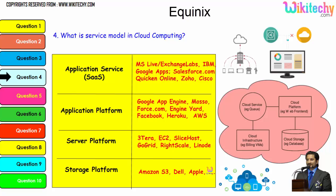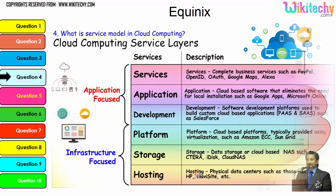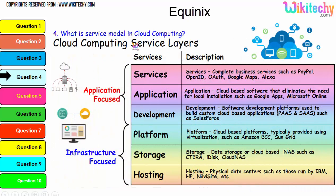Digging deeper into the service model, the typical examples are: application service, application platform, server platform, and storage platform, which is provided by Amazon S3, Dell, and Apple. The important service layers are services, application development, platform, storage, and hosting. These are all important services that will also be asked about in cloud computing interviews.